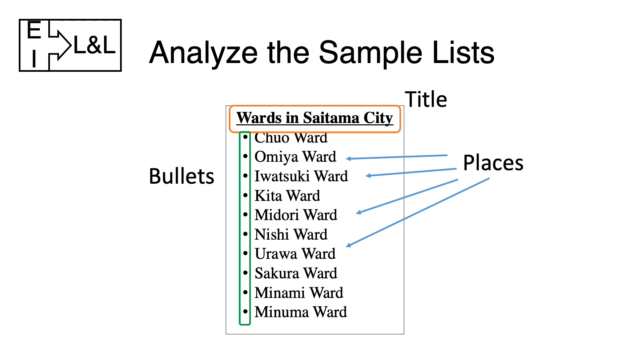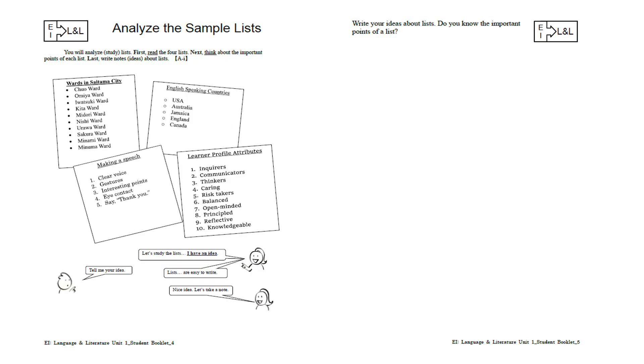Now I will write down my notes on page 5. Let's think together. I have an idea. Okay, point one: a list has a title. Now you can stop this video and try to analyze the other three lists. Please don't forget to write your ideas on page 5. Use different pens with different colors to show your analysis.